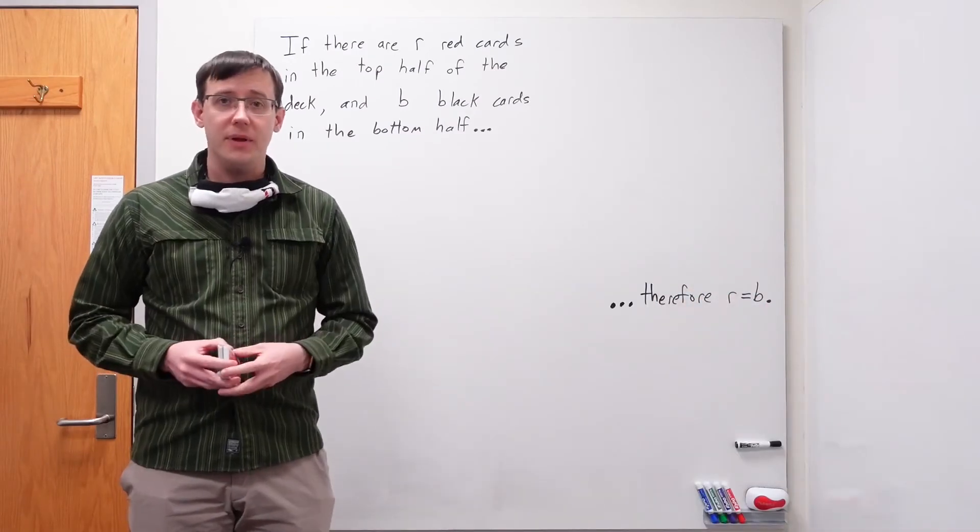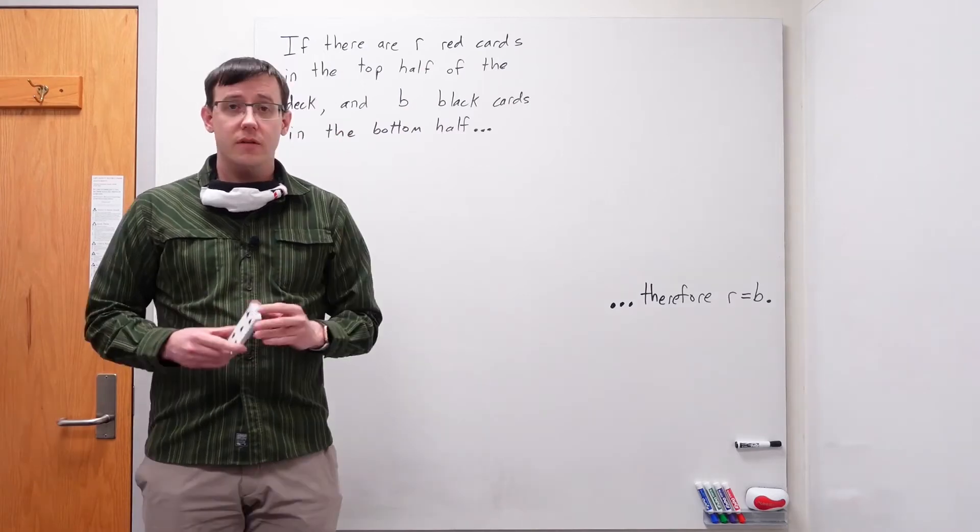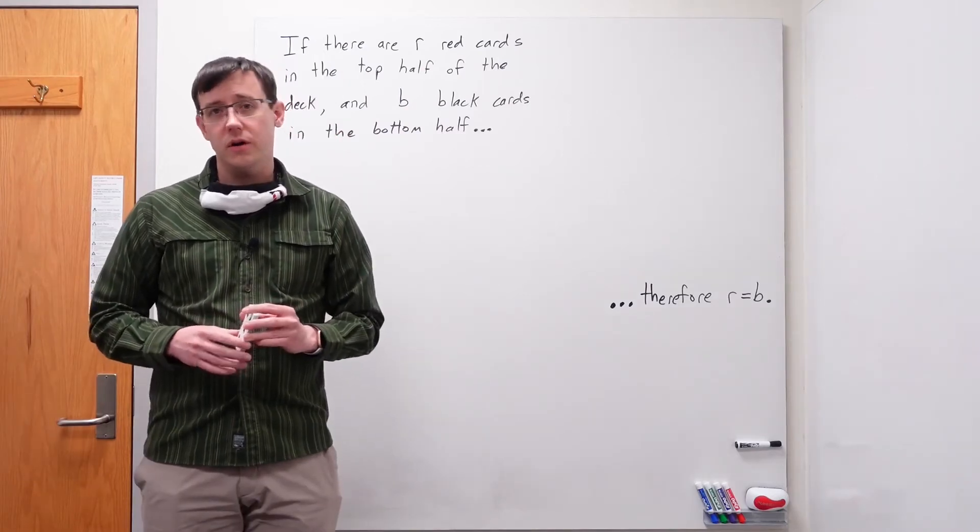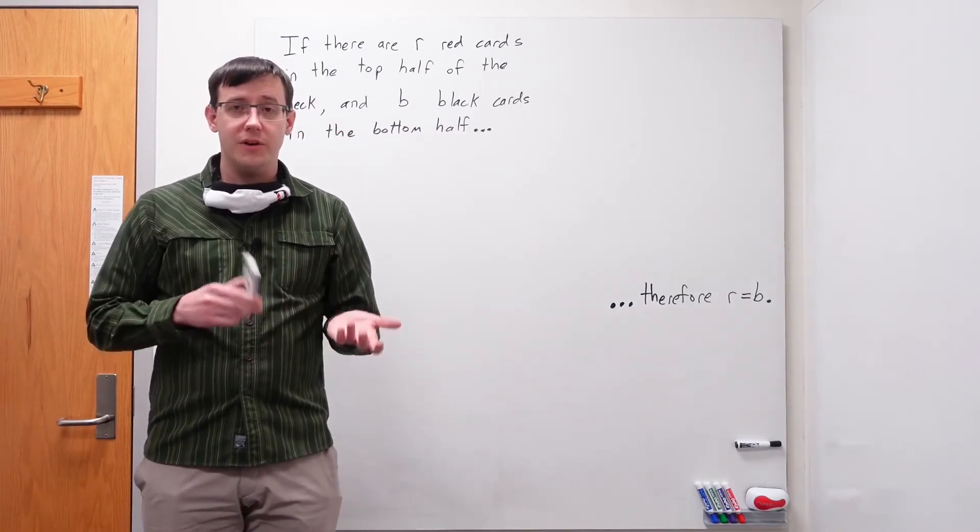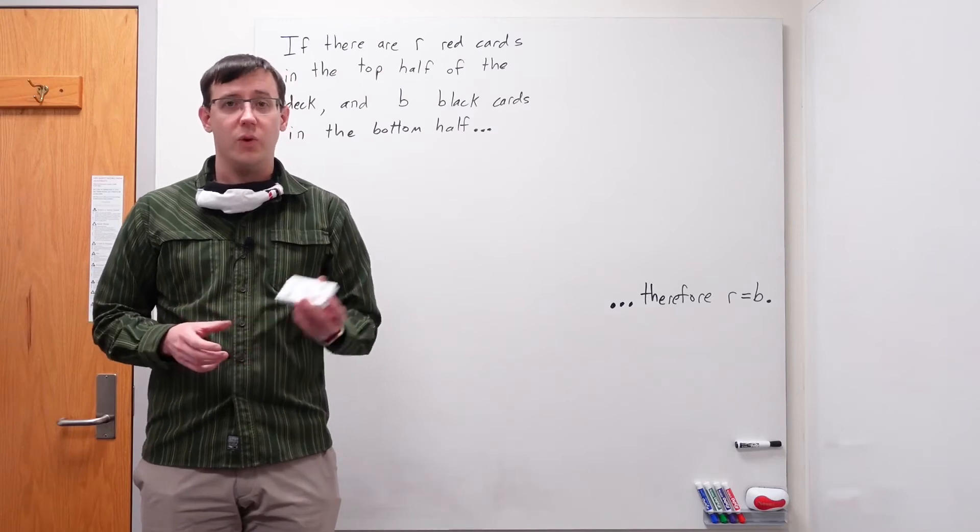To fill in the gap, let's think about what we know about r and b. The full deck contains 52 cards, and so when we split it, both the top and bottom halves have 26 cards.